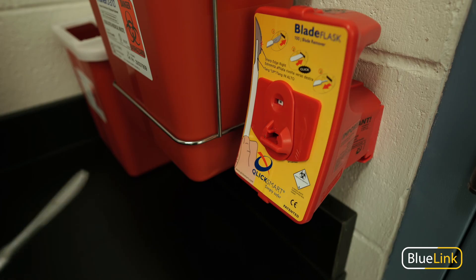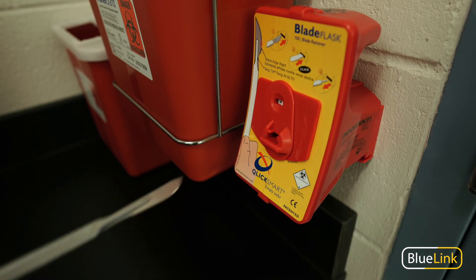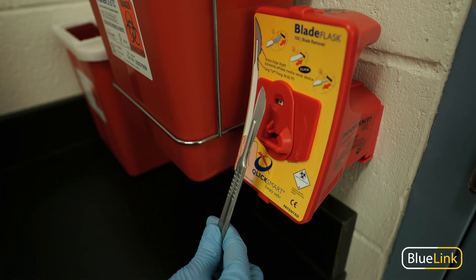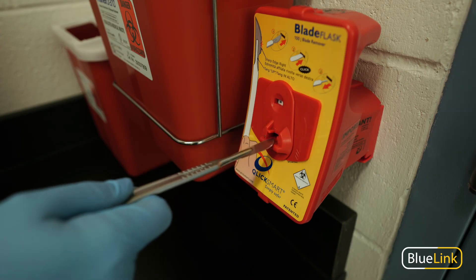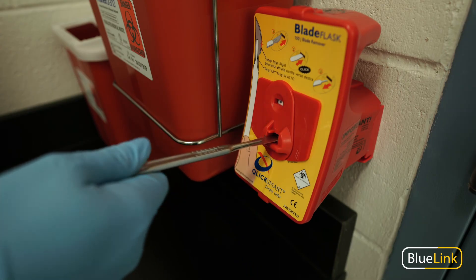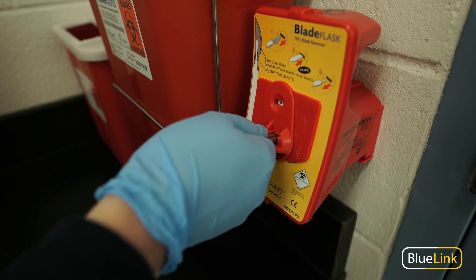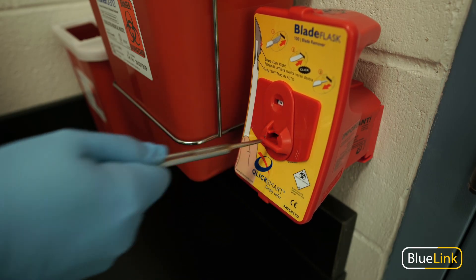After dissection, when you're ready to remove the blade from your handle, we'll use one of these blade removers. And you can follow the instructions shown here, but the blade should always be pointing right. You're going to simply and firmly insert the handle and blade all the way in until you hear a click and pull straight back out.